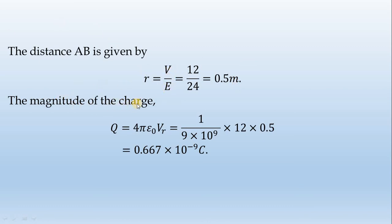The magnitude of the charge, Q is equal to 4 pi epsilon 0 into V times R. In this case, 1 divided by 4 pi epsilon 0 equals 9 times 10 to the power 9, into 12 into 0.5. The value is 0.667 into 10 to the power minus 9 coulomb.